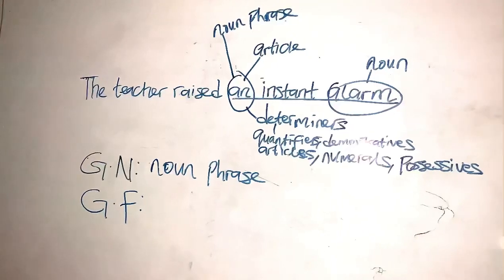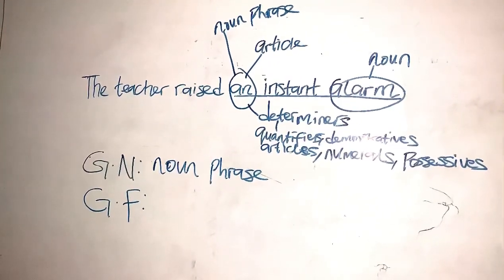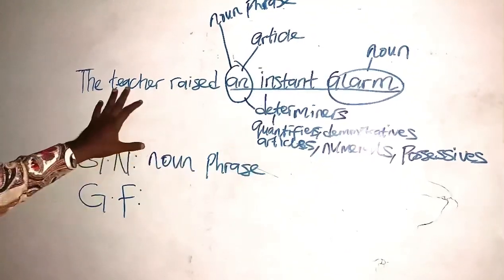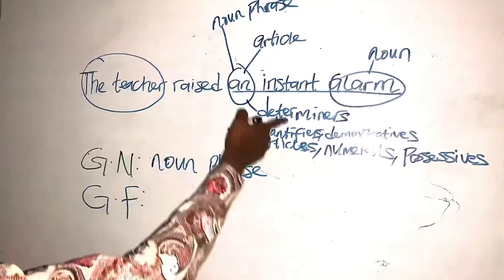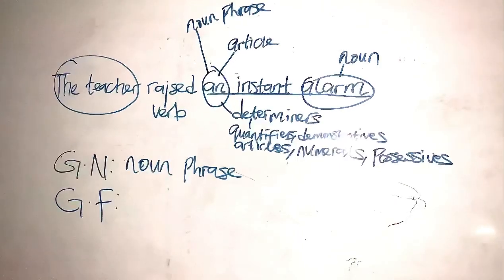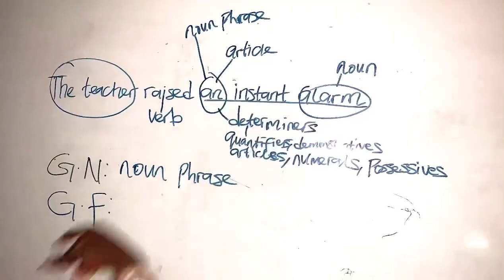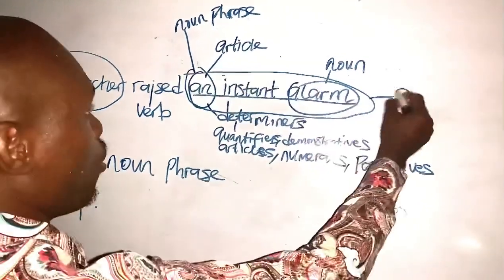So what we have here is 'an instant alarm.' The teacher raised an instant alarm. The teacher here is the subject because it's the one carrying out the action, and raised here is the verb. The action performed by the teacher is 'an instant alarm.' So this expression is an object.